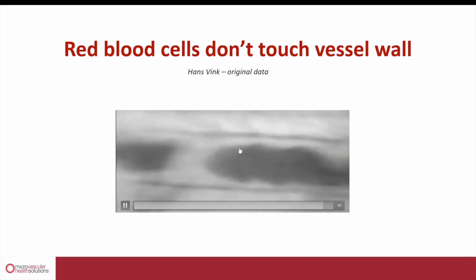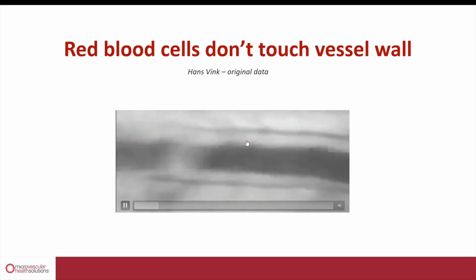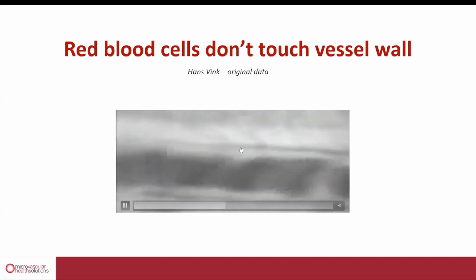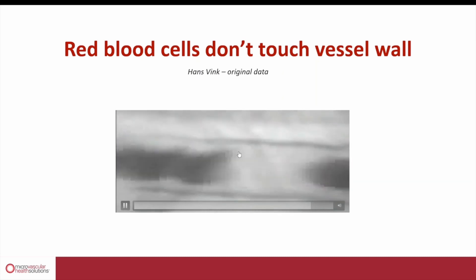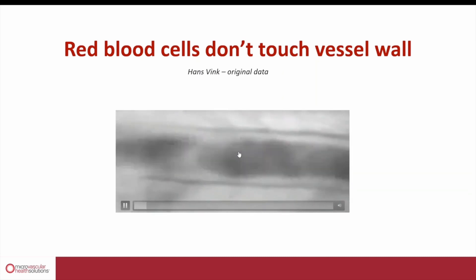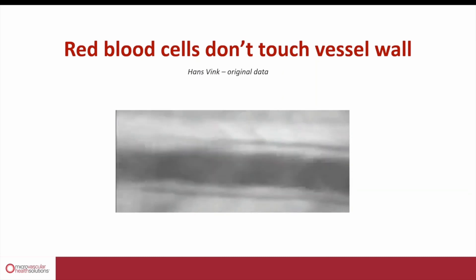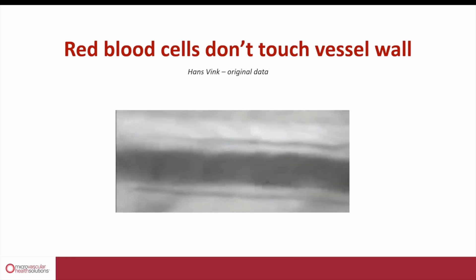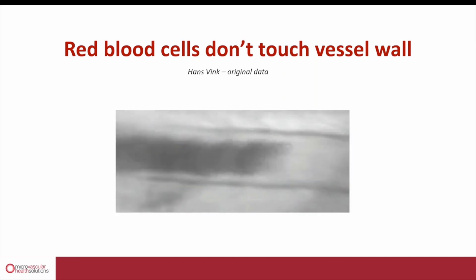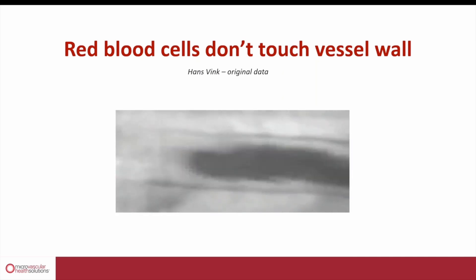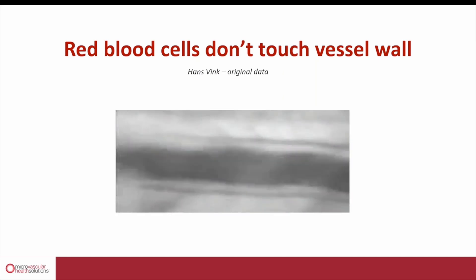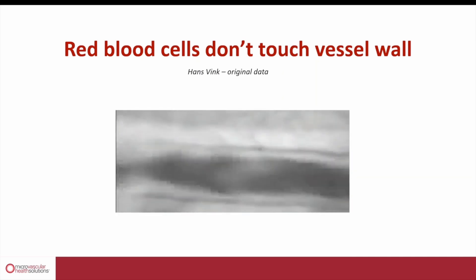We now know that in this big gap between the red cells and the vessel wall, it's not just flowing fluid — it's this transparent protective gel matrix called the glycocalyx, which turns out to be essential to keep your microvascular system healthy and modulate all of the known functions of the endothelium.